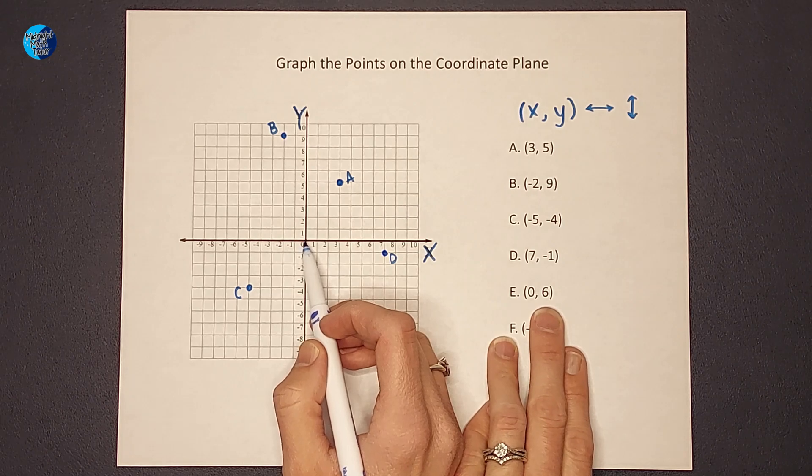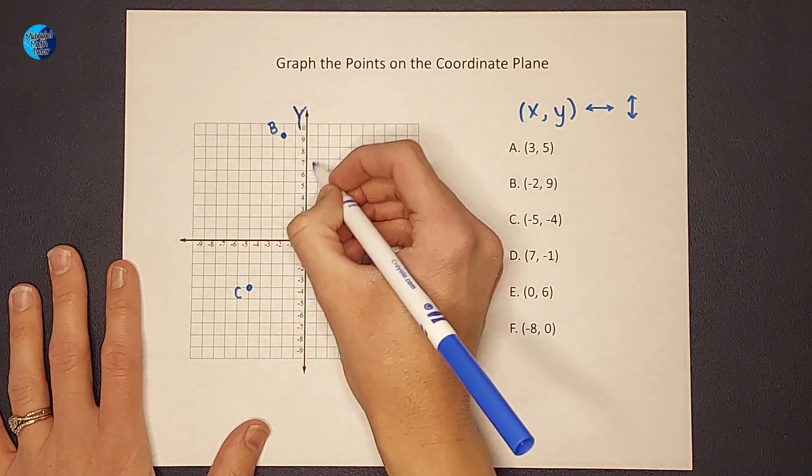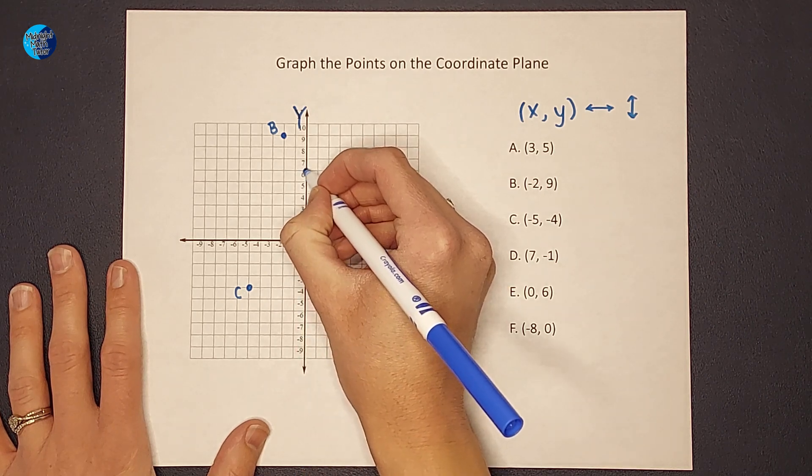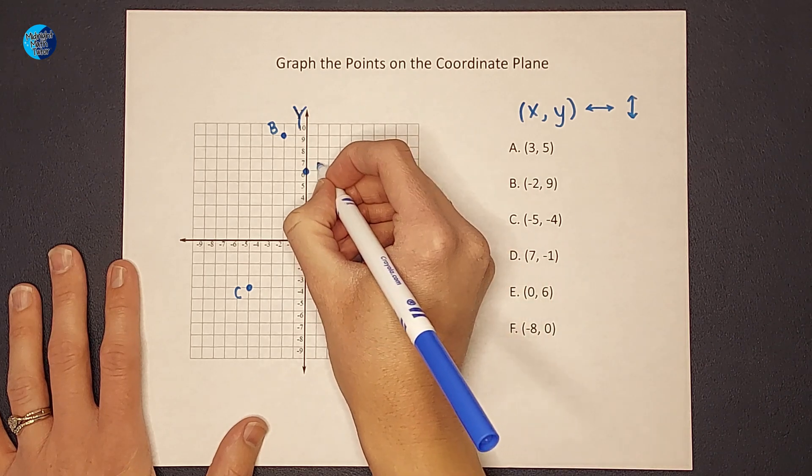And then y is 6. So I'm going to go up 1, 2, 3, 4, 5, 6. So that point is right on the y-axis. That is point E.